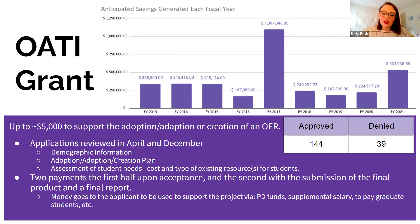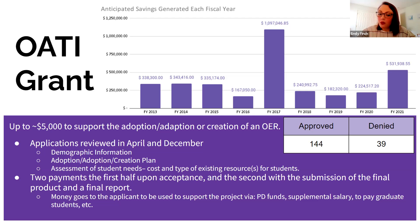A lot of people assume a niche field means we're less likely to fund, but that's not true — niche fields tend to correlate with significantly higher material costs. We review as a core panel including Dr. Bennett, Dr. Lynn Shield, some librarians, members of the Student Governing Association, the Accessibility Center, and some of our OER 'superstars' who've done grants with us in the past. With the award, we issue two payments: the first half upon acceptance and the second when we get the final product and a final report reflecting on the experience of using that material in instruction for the first time.